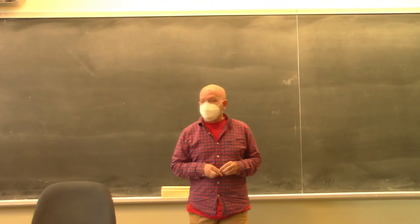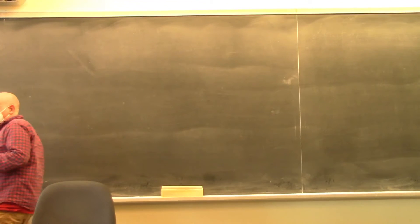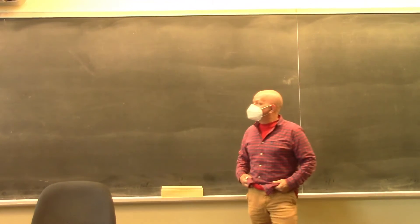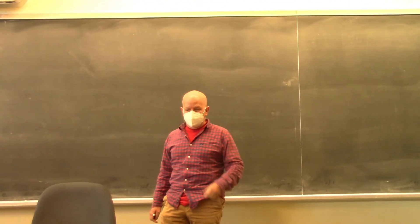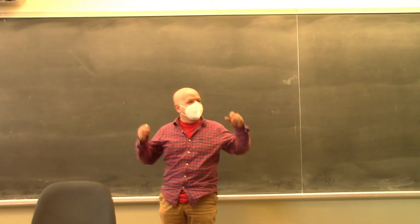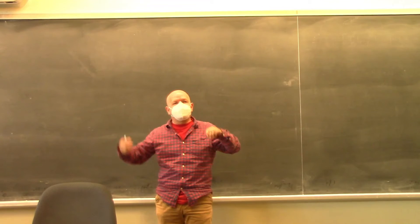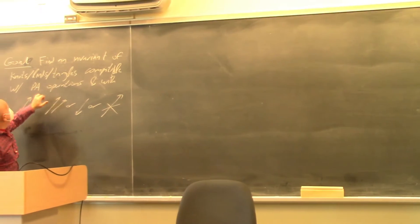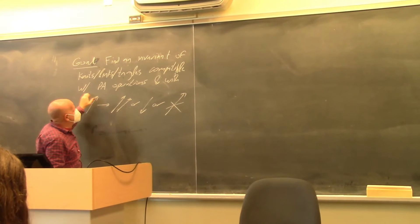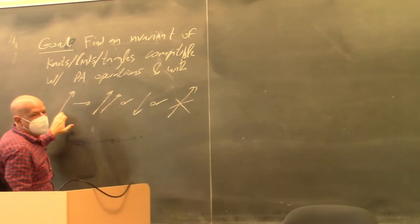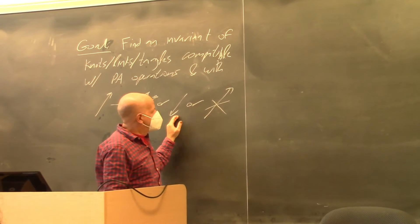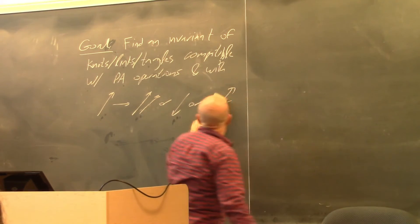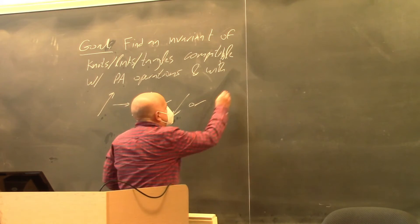Some knot theory problems can be formulated in terms of tangles and operations among tangles. For an algebraic knot theory — think of it like algebraic topology — we want invariants of knots, links, and tangles that are compatible with the planar algebra operations: doubling a strand, reversing it, or erasing it.